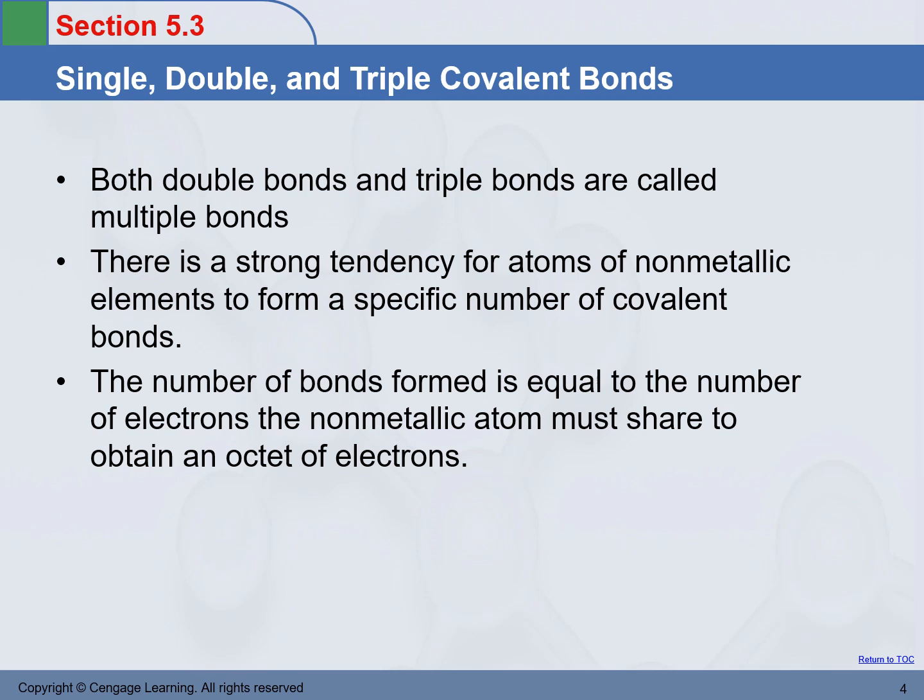The number of bonds formed is equal to the number of electrons the non-metallic atom must share to obtain an octet of electrons. We just went over this. You know how many it is going to share because you know how many it needs to get eight.